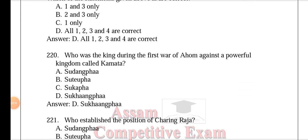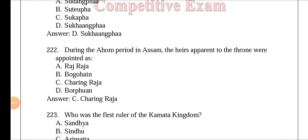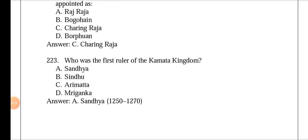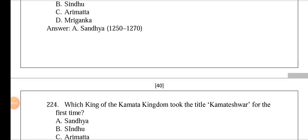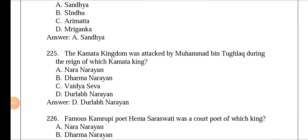The king during the first war of the Ahoms against the powerful kingdom of Kamata was Sukaangfa. Sukaangfa also established the position of Sharingraza. During the Ahom period, the heir apparent to the throne was appointed as Sharingraza — similar to the concept of Yuvraj. The first ruler of the Kamata kingdom was Sandhya (1250–1270). Sandhya was also the first king to take the title of Kamateshwar.